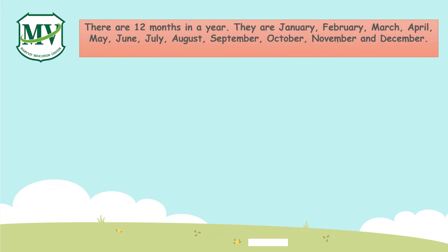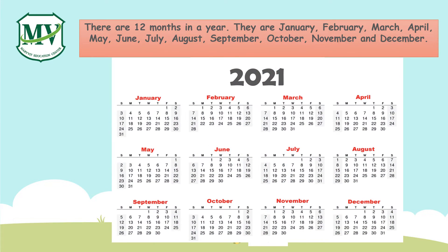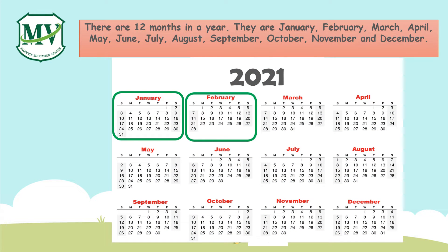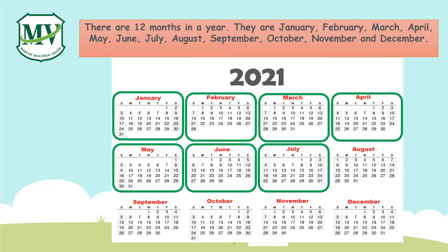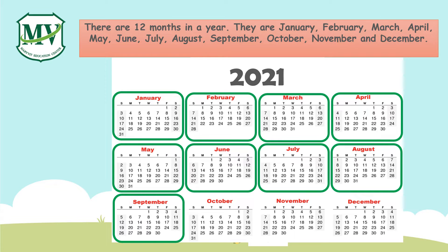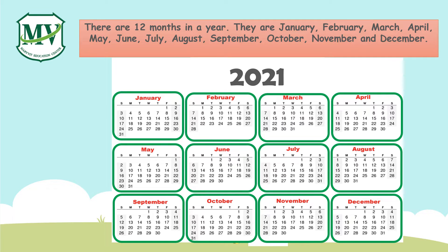There are 12 months in a year. They are January, February, March, April, May, June, July, August, September, October, November, and December. It also has a list of all the days in a month.